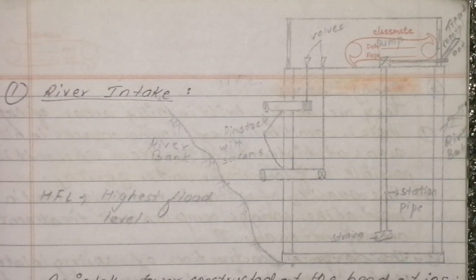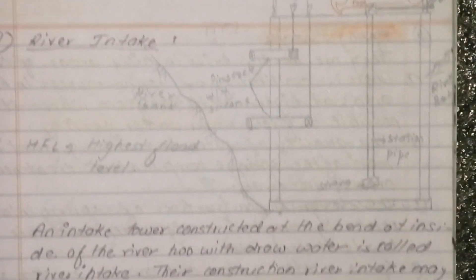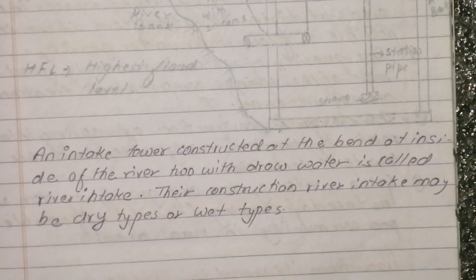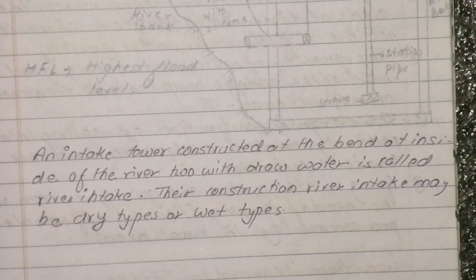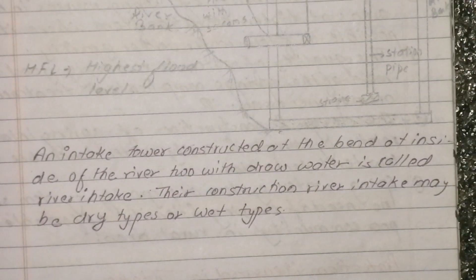The river intake is very interesting. It is constructed at the bend inside of the river to withdraw water — this is called river intake. The river intake may be of dry type or wet type.